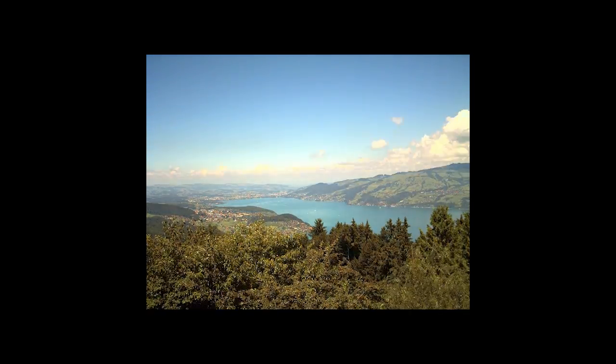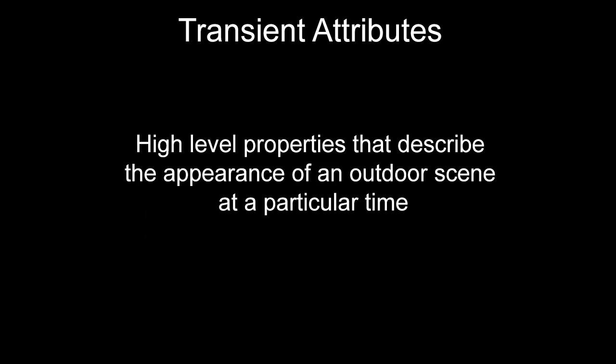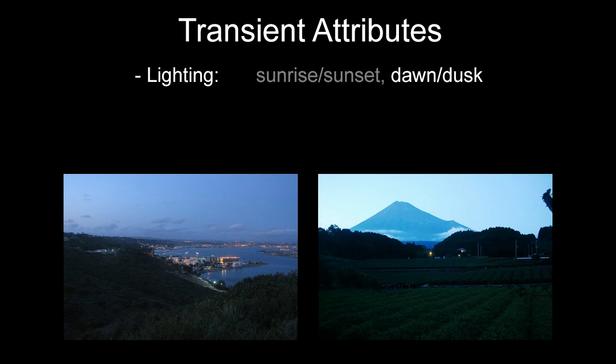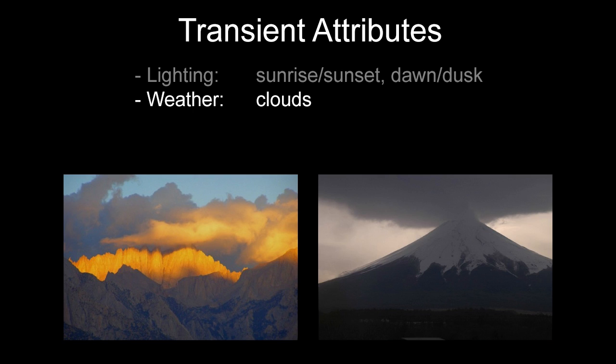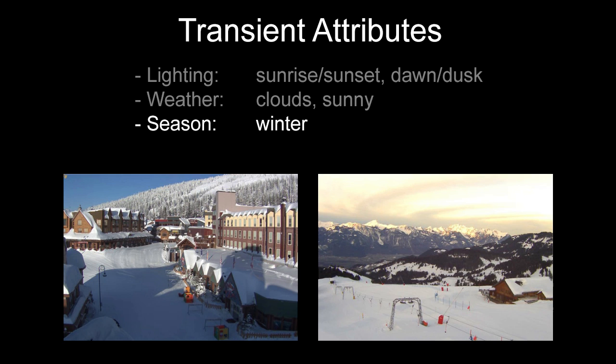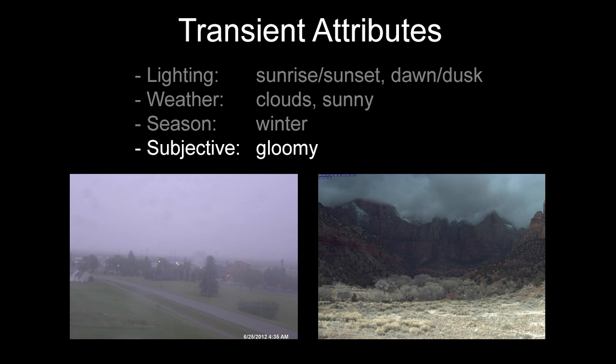We study these variations and introduce transient attributes, which are high-level properties that describe the scene at a particular time. We define a list of 40 transient attributes related to lighting, such as sunrise or dusk; weather, such as clouds or sunny; season, such as winter. We also use a few subjective properties, such as gloomy.